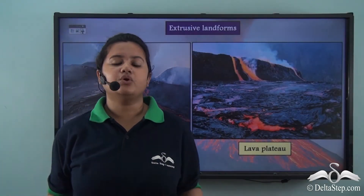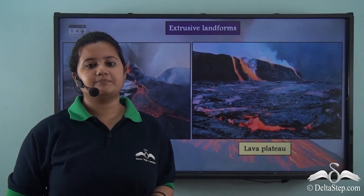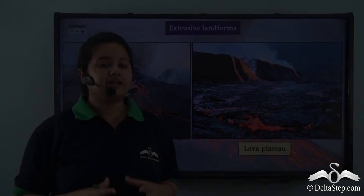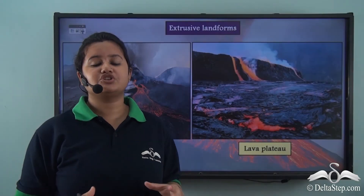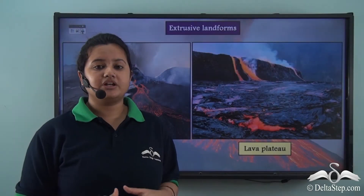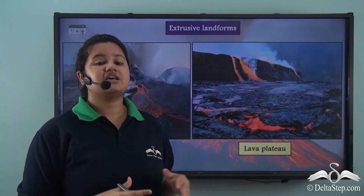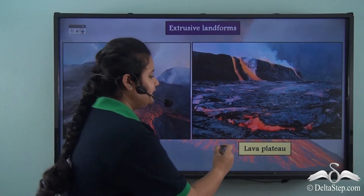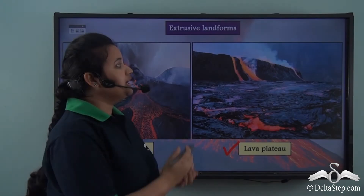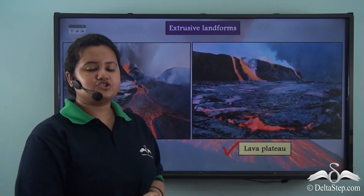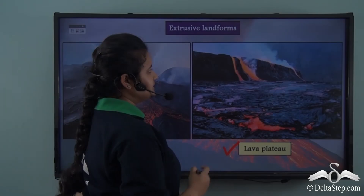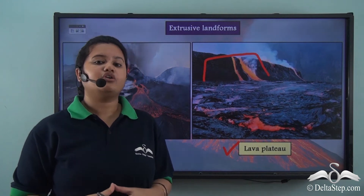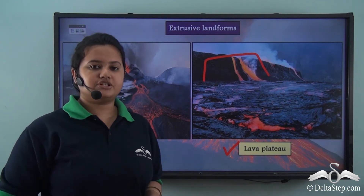During fissure volcanic eruptions, eruptions occur at different time intervals. During fissure eruption, lava solidifies in successive sheets and forms a plateau, and the plateau thus formed is called a lava plateau. This picture shows a lava plateau where the plateau has been formed due to the condensation of lava in successive sheets.